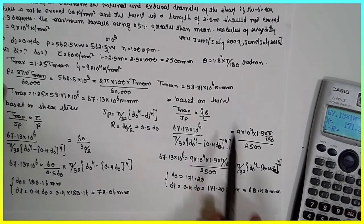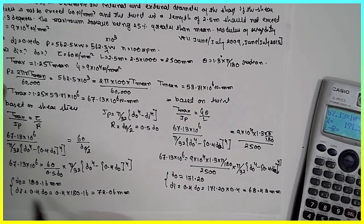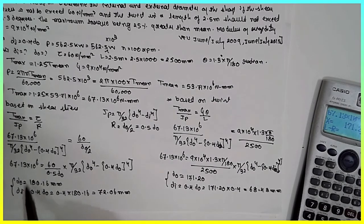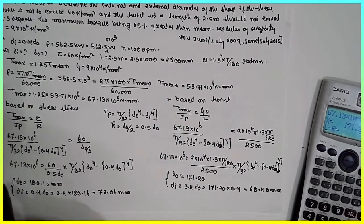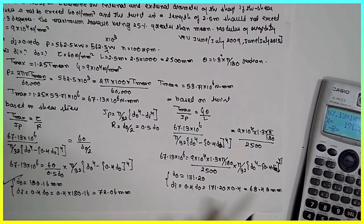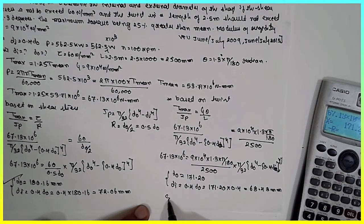Comparing both conditions: the shear-based diameters (D0 = 180.16 mm, Di = 72.06 mm) are larger than the twist-based diameters. The larger diameter must be selected. I am Santosh Gayankar — thank you very much.